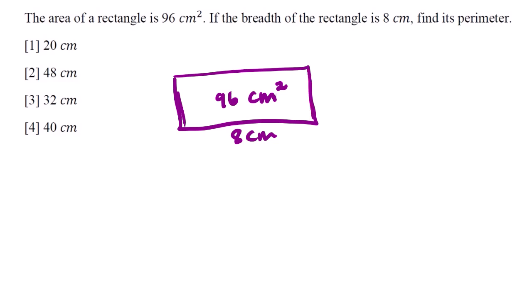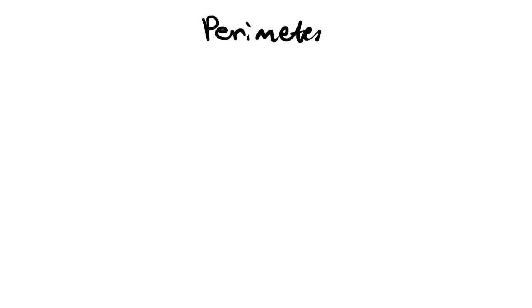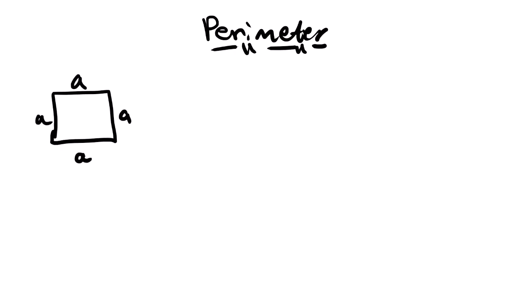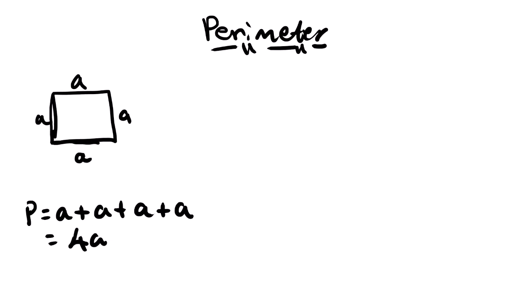The question also asks for the perimeter. The perimeter of a square — if the sides are all a — we are going to have a + a + a + a, which gives us 4a. Remember that we are just looking at the continuous line of the boundary of the geometric figure — the closed geometric figure or shape.